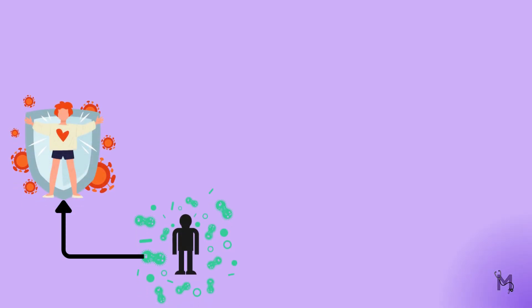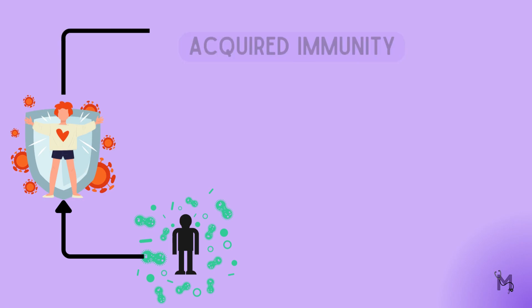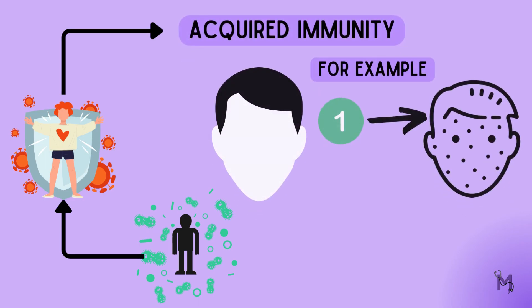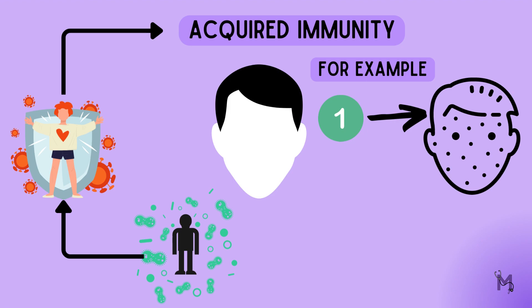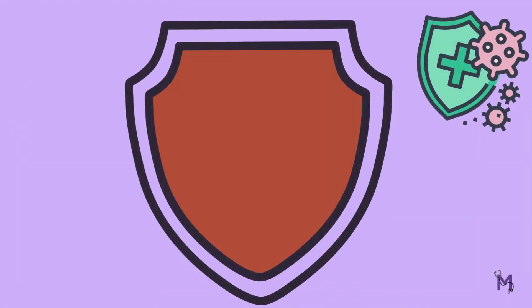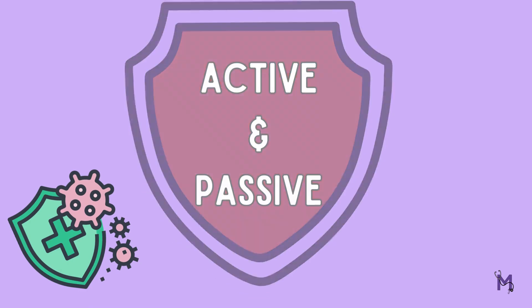Moving on, if immunity is acquired during the lifetime of an individual, it is termed as acquired immunity. For example, once a person gets chickenpox, it is very rare for them to be affected by it a second time, since the body has acquired immunity against it. This type of immunity can further be divided into active and passive immunity.